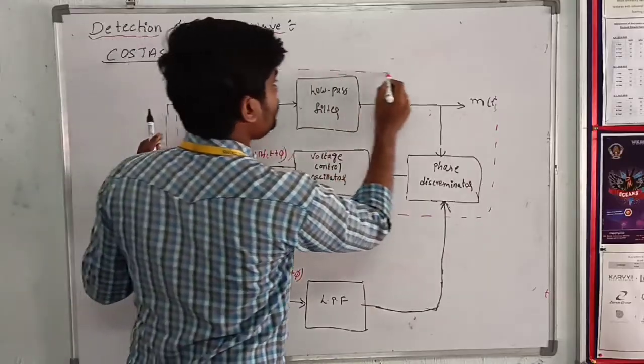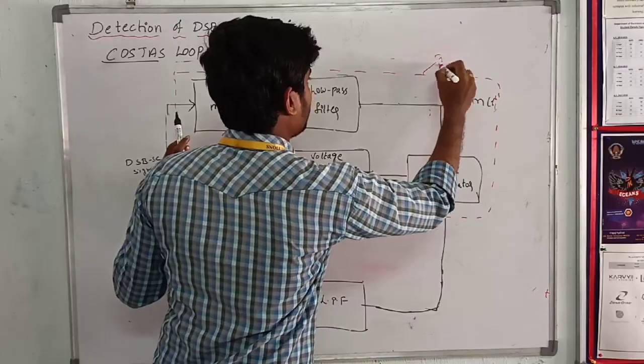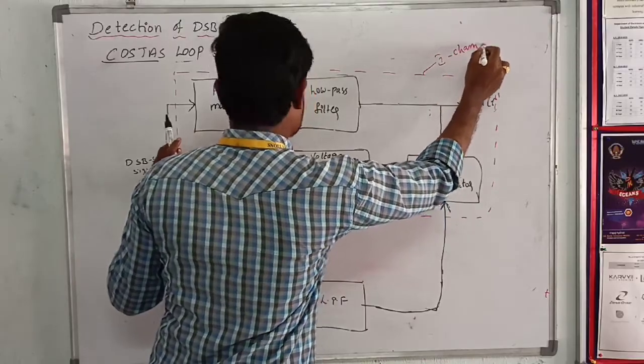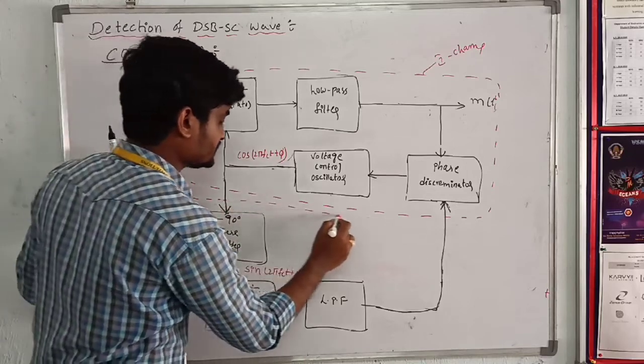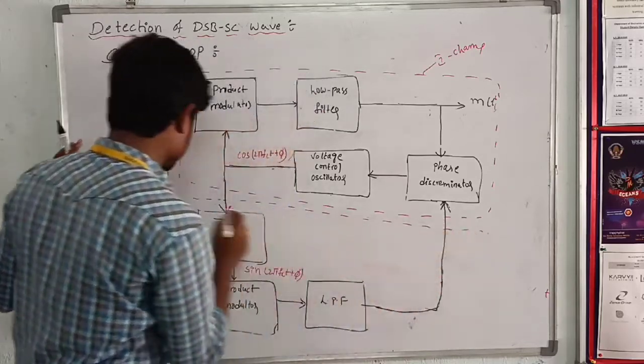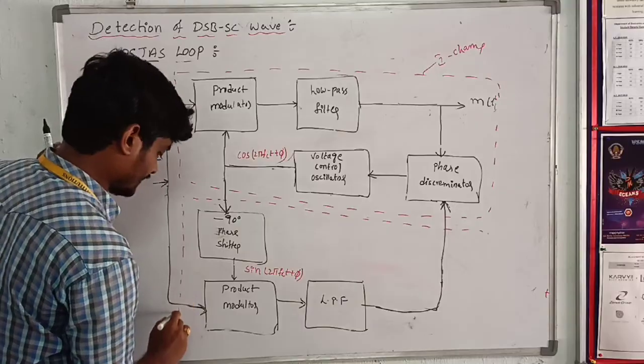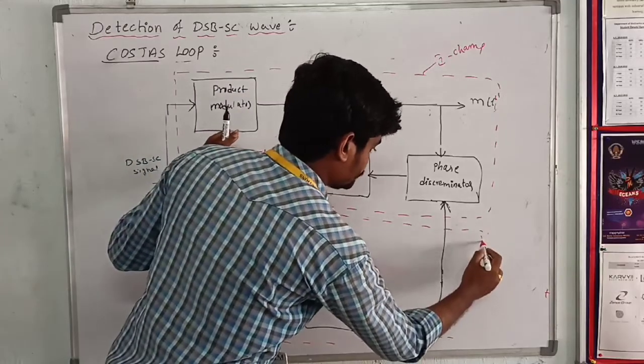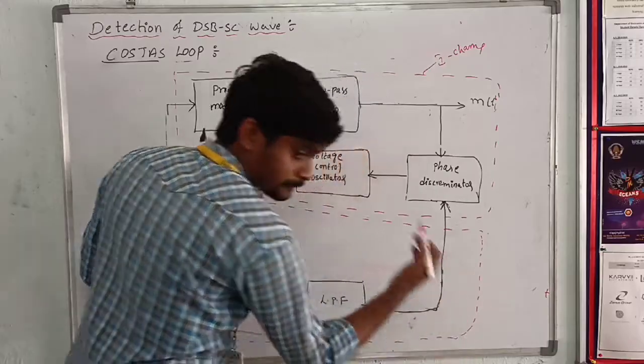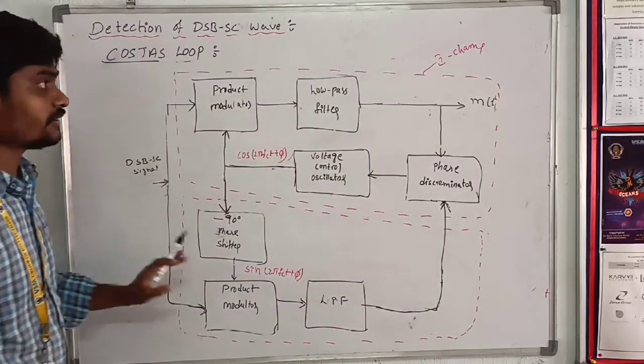This is the I channel coherent detection. The lower path uses the out of phase signal, so this is the quadrature phase coherent detector or Q channel coherent detector.